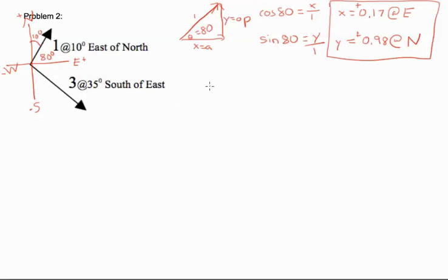So for our second vector, we have 3. That's going to be our theta. X is adjacent and our y is opposite. Now, 35 degrees south of east. So we go to the east and we go south. And that's 35 degrees, so it is our theta in this case.